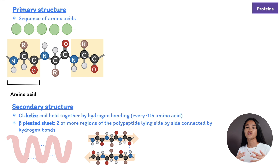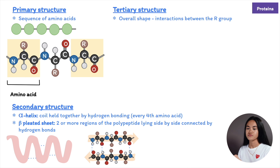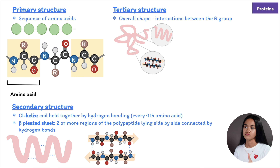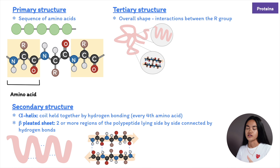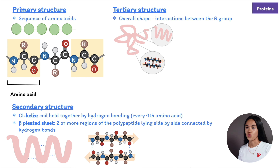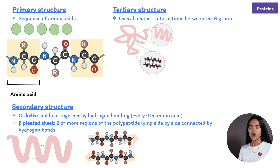The tertiary structure is the overall shape of a protein or polypeptide chain, due to interactions between the R groups or side chains of the amino acids. One interaction is a hydrophobic reaction, where amino acids with non-polar side chains cluster at the core of the protein. Hydrogen bonds between polar side chains and ionic bonds between positively and negatively charged side chains also help stabilize the tertiary structure. Another interaction involves disulfide bridges — covalent bonds that form between two cysteine monomers which have thiol or sulfur-hydrogen groups.